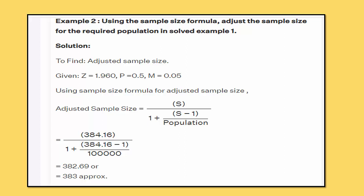To conclude: Cochran's formula is useful when your population is unknown and infinite. In all the examples, in the first stage the population is unknown, and in the second stage we have calculated the adjusted sample size with the help of the given or considered population.